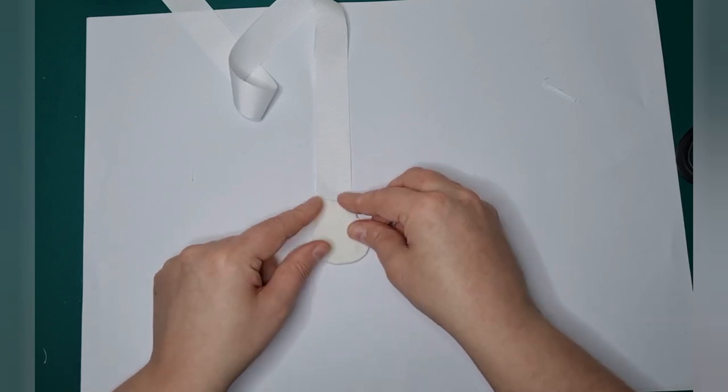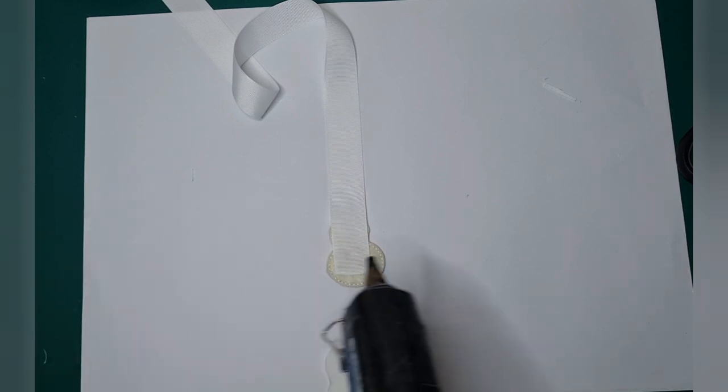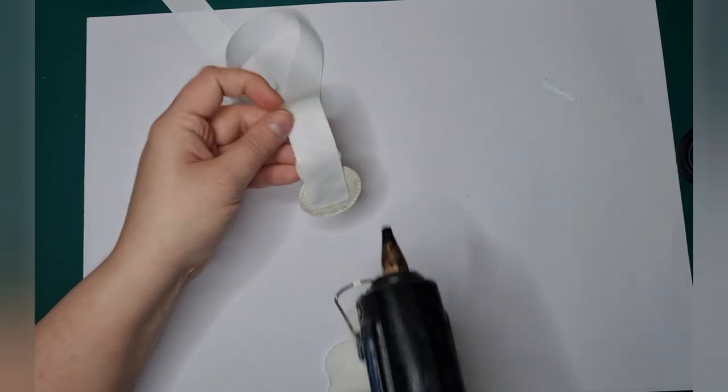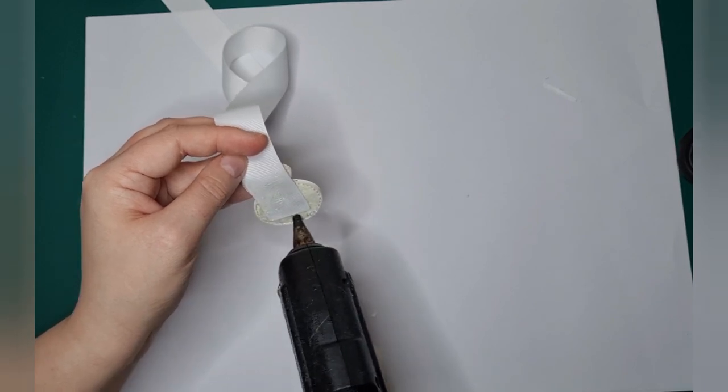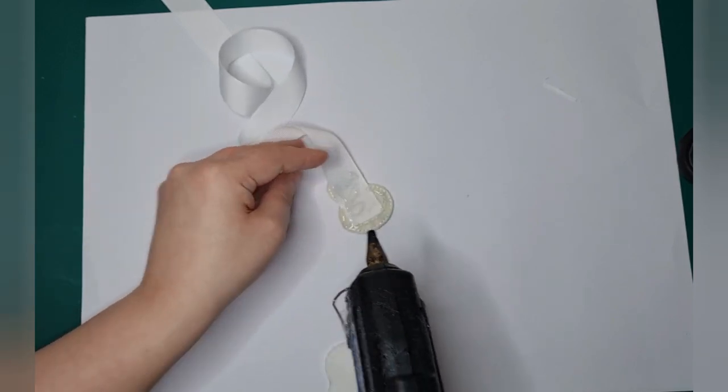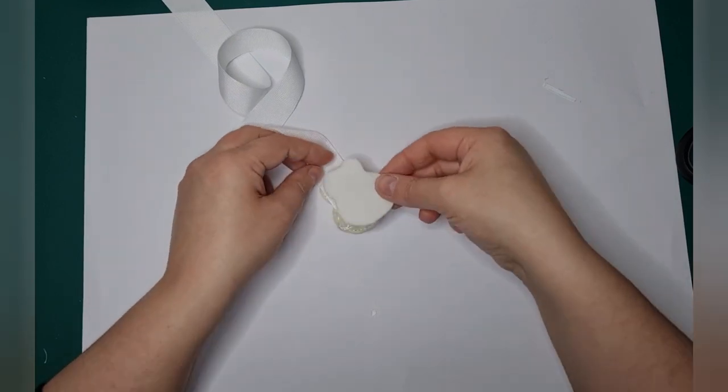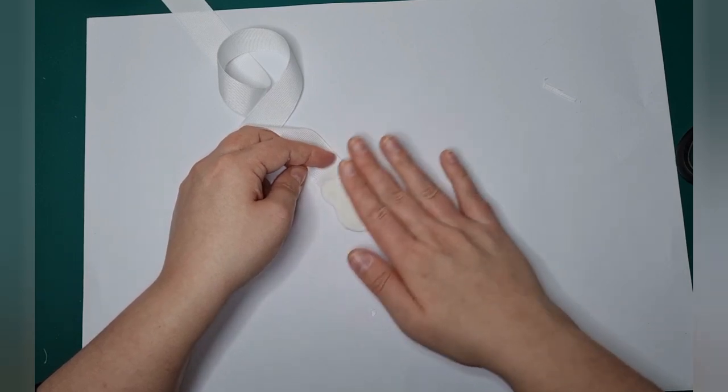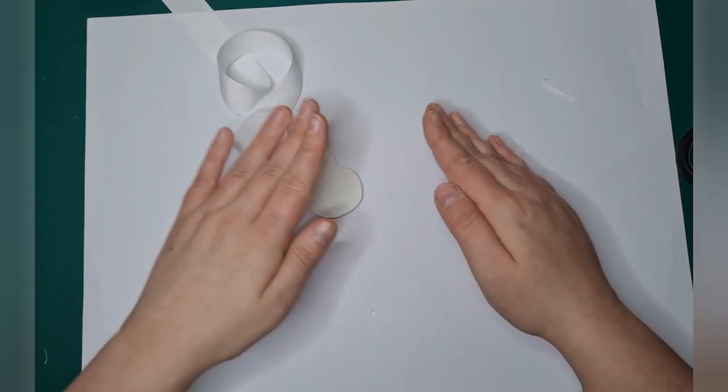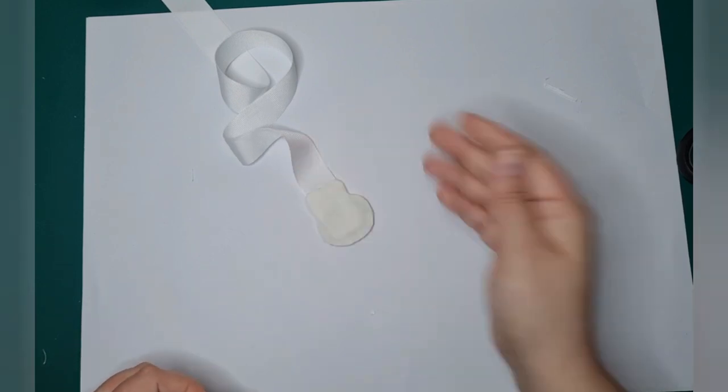Make sure your felt pieces the right way around. There we go. And then we're going to put some glue on this bit. And again just give it a pat down so you don't have any lumps of glue underneath your felt.